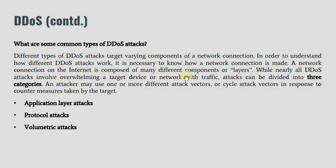A network connection on the internet is composed of many different components and layers. While nearly all DDoS attacks involve overwhelming a target device or network with traffic, attacks can be divided into three categories. An attacker may use one or more different attack vectors, or cycle through attack vectors in response to countermeasures taken by the target. The attacker can apply different forms of DDoS attack, so that even if one is detected, the others can still be running. The more different types of attacks used, the more difficult it becomes for the receiver to detect them. The three categories are application layer attacks, protocol stack attacks, and volumetric attacks.